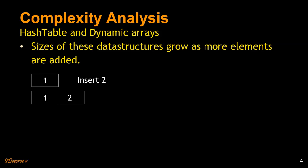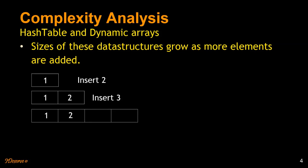If we want to insert 3, we double the size again, copy elements 1 and 2 from the old array, then insert 3. If we want to insert 4, we can do it in constant time — we only double the size when we max out the current array. That's when we hit the worst case for insertions.